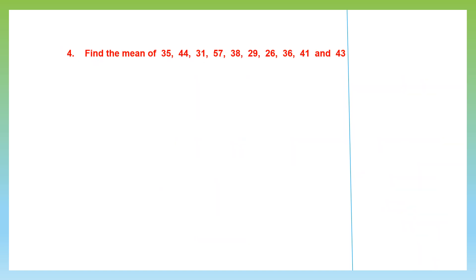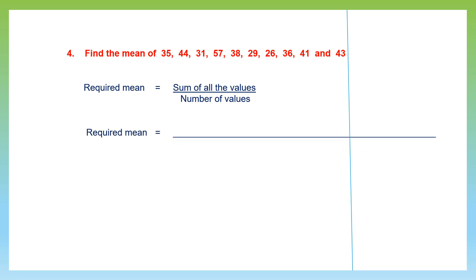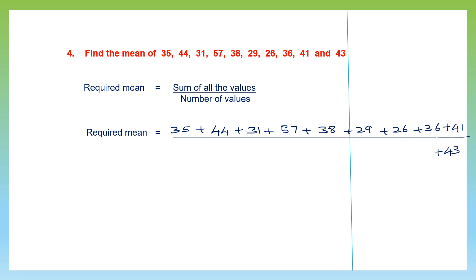Question 4: Find the mean of all these numbers given. We start by saying the required mean is the sum of all the values divided by the number of values. So we need to add up: 35, 44, 31, 57, 38, 29, 26, 36, 41, and 43.